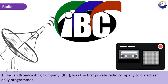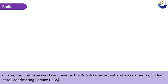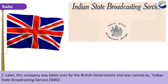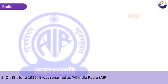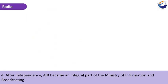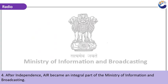The Indian Broadcasting Company (IBC) was the first private radio company to broadcast daily programs. Later, this company was taken over by the British government and named the Indian State Broadcasting Service (ISBS). On 8th June 1936, it was renamed All India Radio (AIR). After independence, All India Radio became an integral part of the Ministry of Information and Broadcasting.